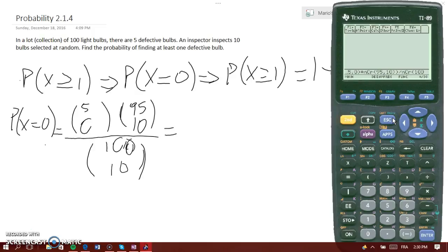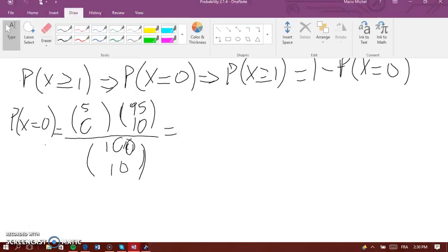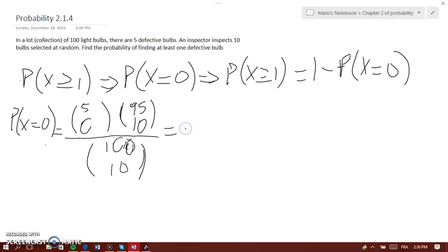That equals 0.584, so the probability of none is 0.584. So the probability that at least one of them is defective would be 1 minus 0.584.